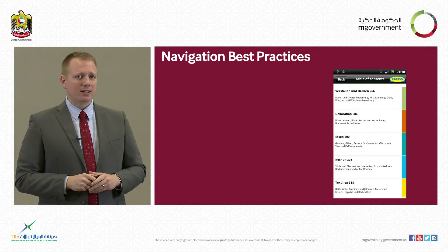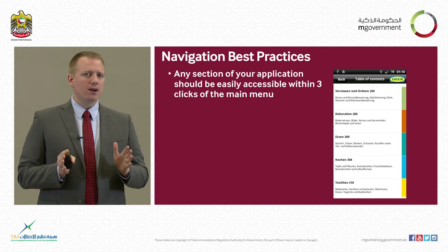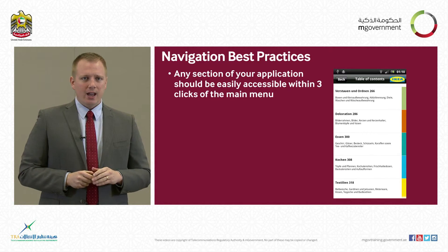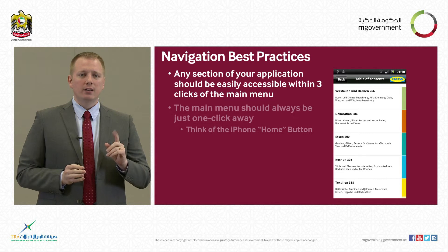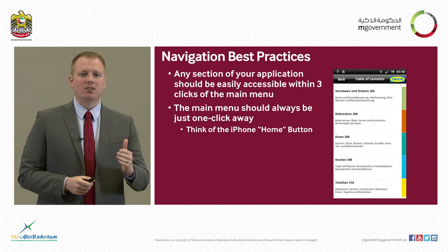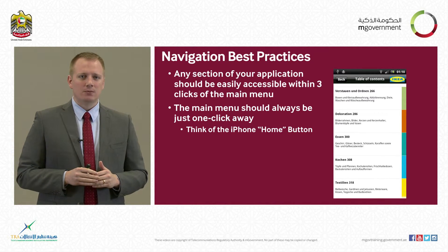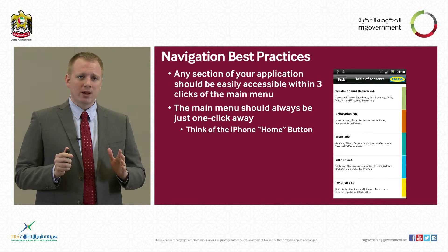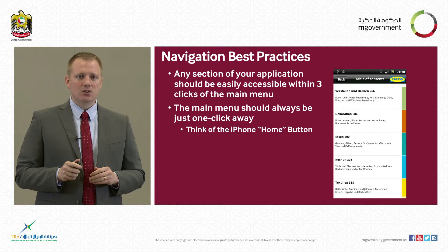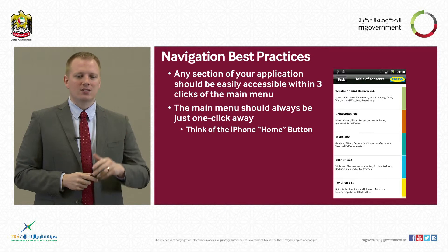Consider navigation best practices, including something called the three-click rule. This means that just about any function within an application should be accessible to a user within three clicks. An easy way to achieve this is to make one click the main menu — think of the home button on an iPhone. Press that single button and you are back to the home screen, leaving two clicks to reach any application. Also keep in mind that every step in your flow chart could count as one click, so as you lay out your process, keep that three-click rule in mind.